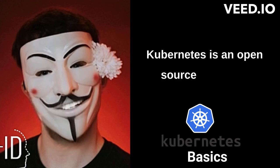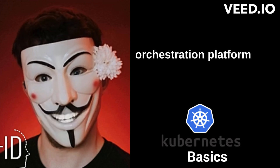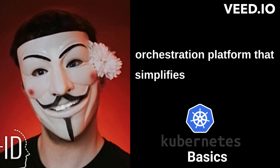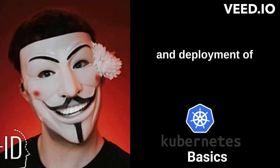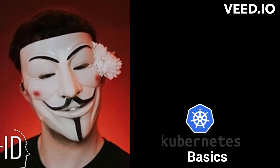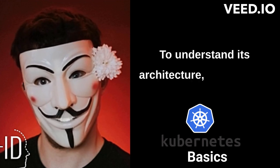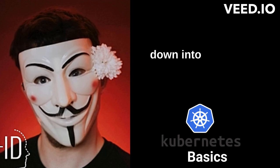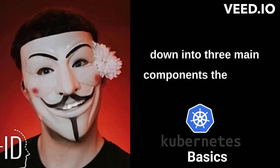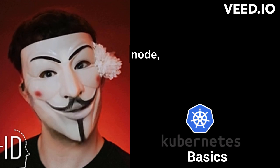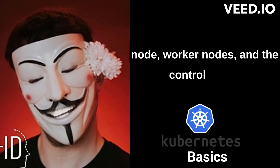Kubernetes is an open-source container orchestration platform that simplifies the management and deployment of applications. To understand its architecture, let's break it down into three main components: the master node, worker nodes, and the control plane.